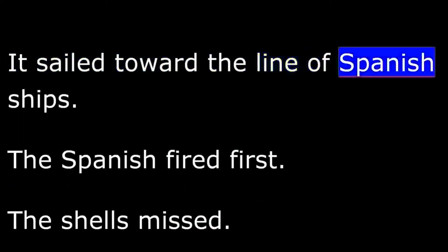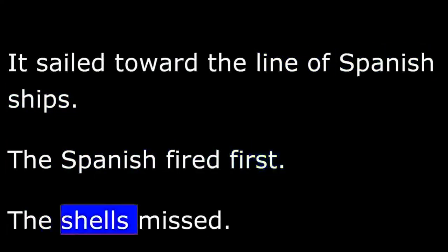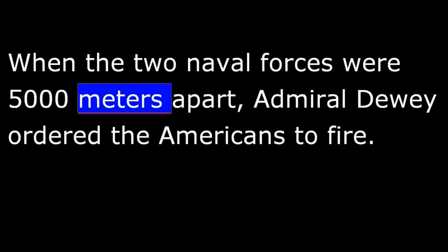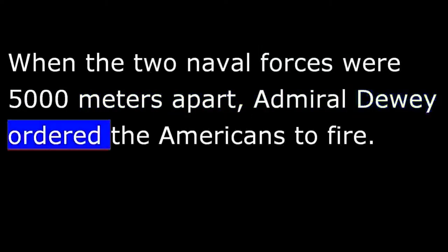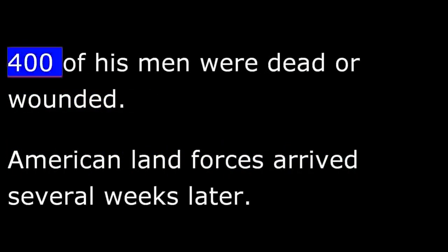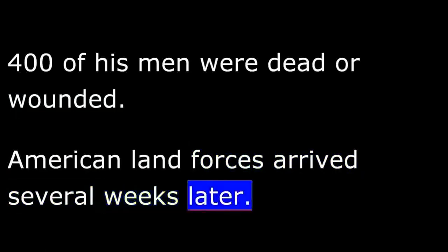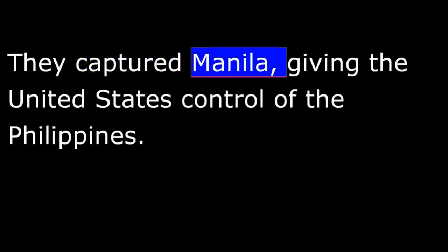The American fleet arrived in Manila Bay on May 1st. It sailed toward the line of Spanish ships. The Spanish fired first, but the shells missed. When the two naval forces were 5,000 meters apart, Admiral Dewey ordered the Americans to fire. After three hours, Admiral Montojo surrendered. Most of his ships were sunk and 400 of his men were dead or wounded. American land forces arrived several weeks later and captured Manila, giving the United States control of the Philippines.